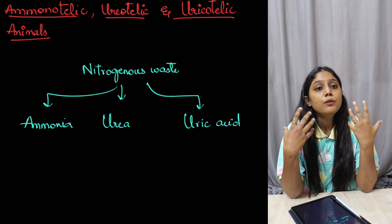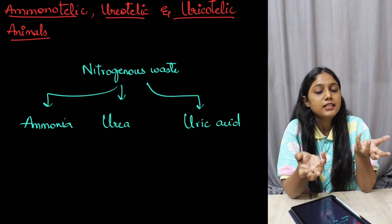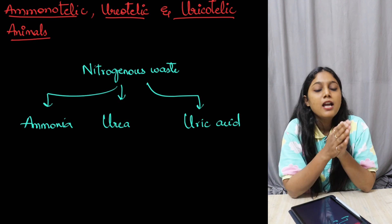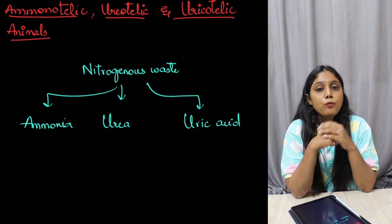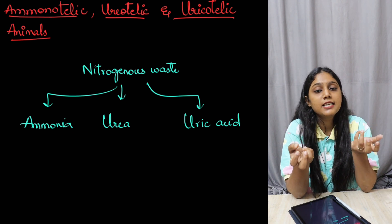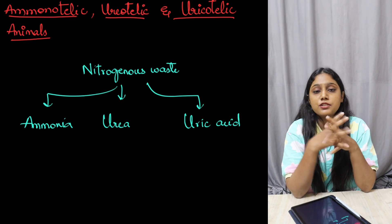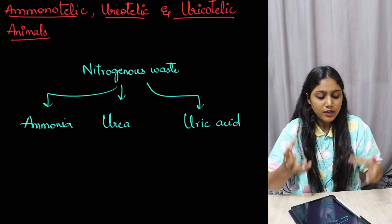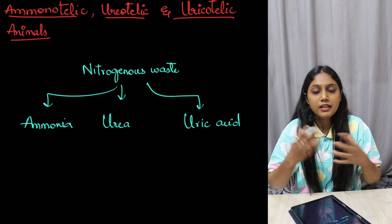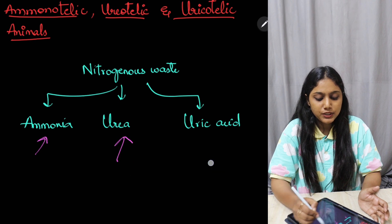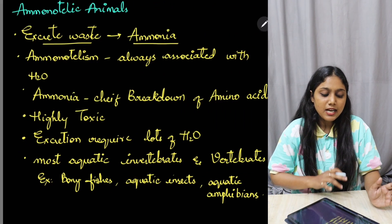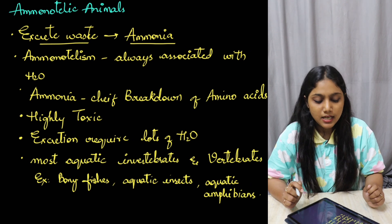On the basis of primary nitrogenous waste excreted, we can classify animals. Nitrogenous waste in your body comes from proteins and nucleic acids through catabolism. Most organisms excrete nitrogenous waste majorly in three different forms: ammonia, urea, and uric acid. On this basis, we can divide our animals.